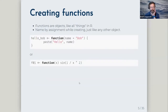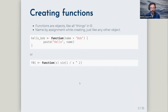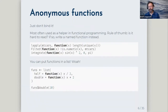Creating functions is a review for everybody. Functions are objects like all things in R — you name them by assigning them while creating them, just like any other object. The brackets are really only to tell R that it's a code block. Functions can be written either with or without brackets. The function object doesn't need to be named — you can use it directly, which is where anonymous functions come from.